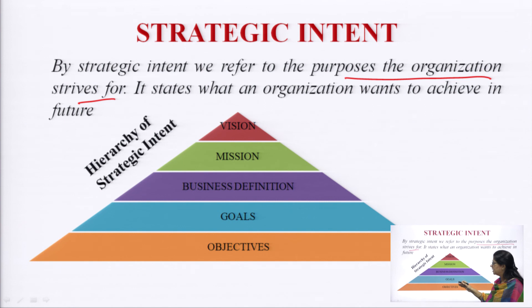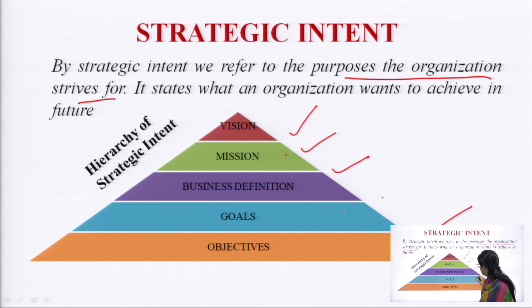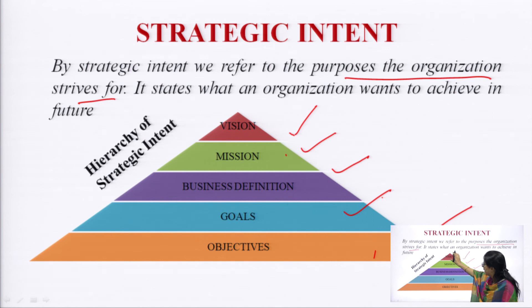The hierarchy of strategic intent can be seen as a pyramid: Vision at the top, then Mission, then Business Definition, then Goals and Objectives. Vision is where you want to see yourself after a certain period of time. Mission is the reason of your existence. Business definition has three elements. Goals state what you have to achieve in a broader way, and objectives tell you how to achieve that. First you identify the vision, then create the mission, then business definition, then goals, and finally the objectives.